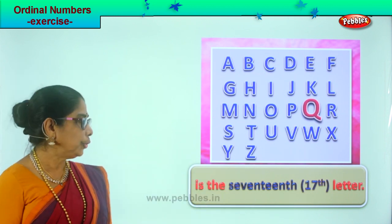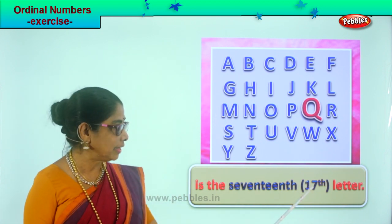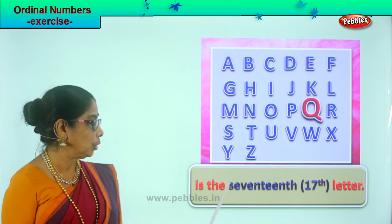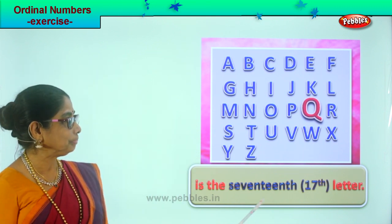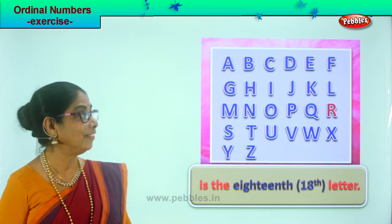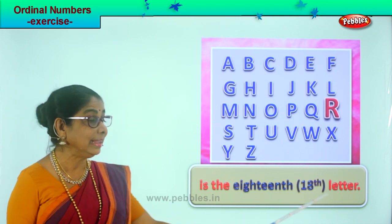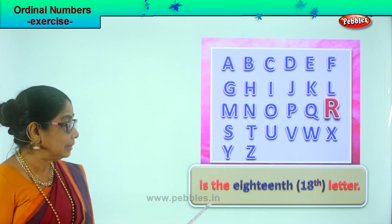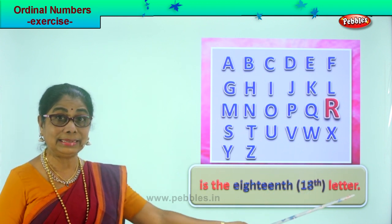After P, Q — Q is the seventeenth letter. Put seventeen and TH. Q is the seventeenth letter. After Q comes R — R is the eighteenth letter. Write eighteen and TH. R is the eighteenth letter.